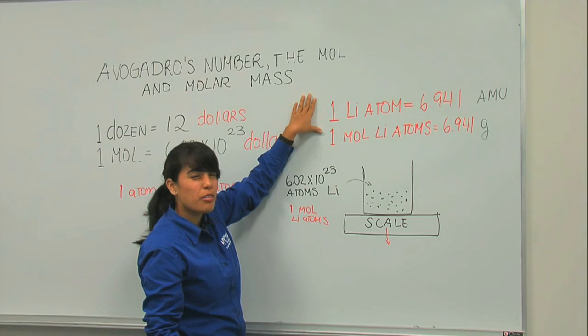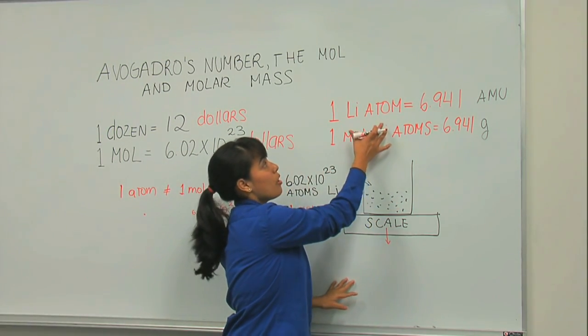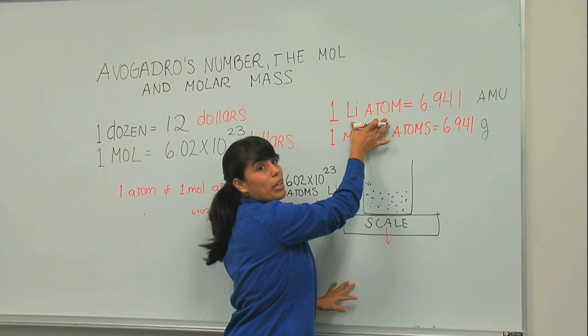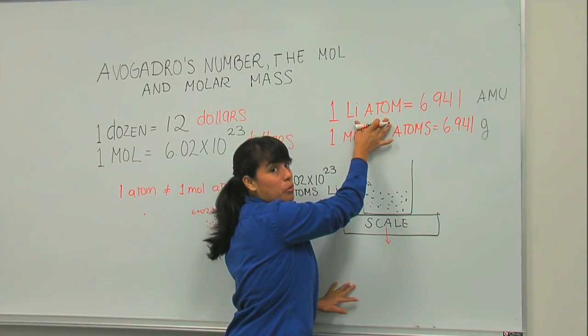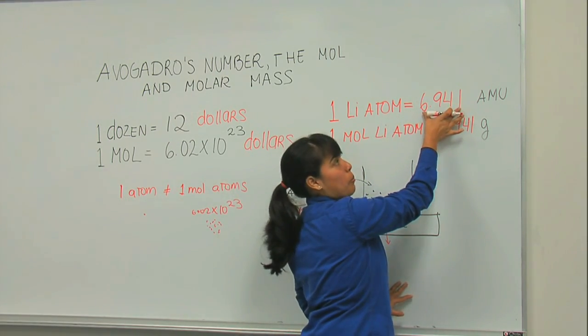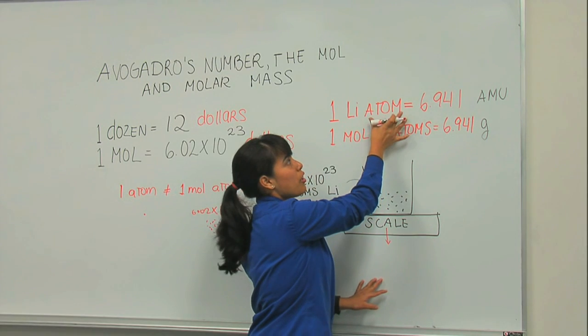So let's take a look at the periodic table. If we remember, the weight of one lithium atom is written in the periodic table. And they give you a number. They give you 6.941.